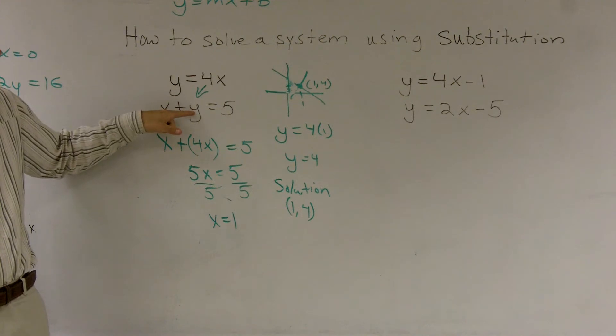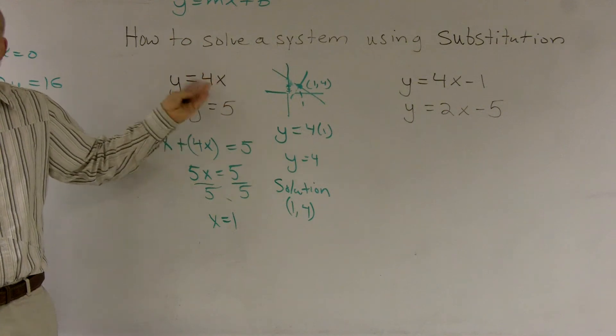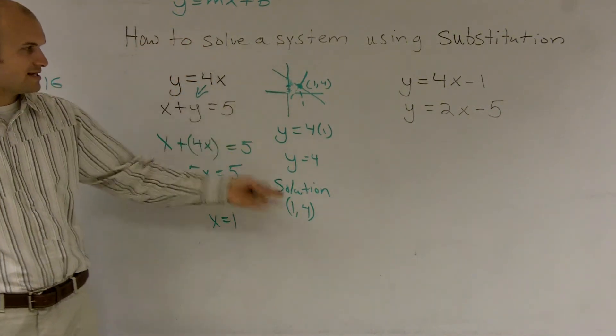You put a four in for y and a one in for x, one plus four is five, five equals five. And if we were to graph this using the methods we've previously learned, you'd notice that they intersect at one comma four.